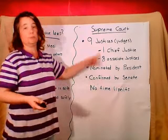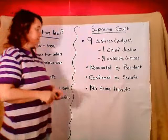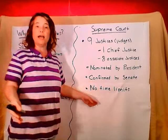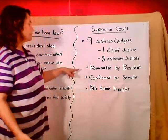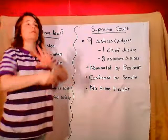After they do become a judge, there are no time limits. That means they are always in as a justice — they can be a justice until they die or until they retire. They never have to leave their job unless they want to. They're not voted in, so once they become a justice they're there for life.